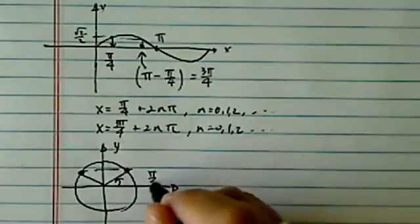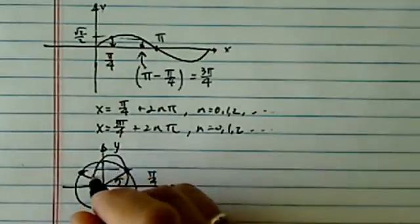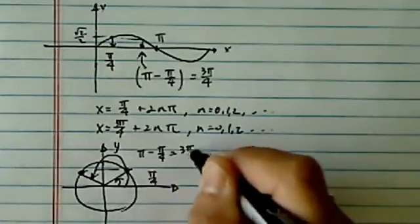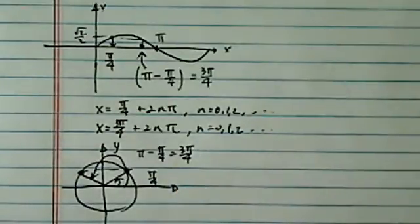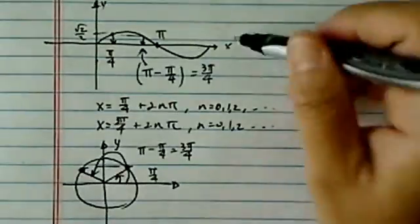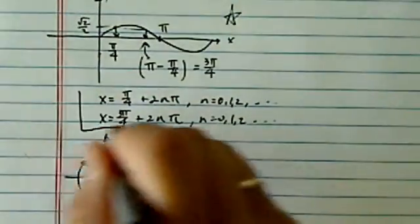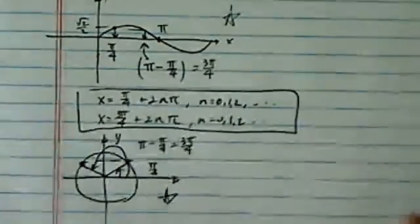One is over here, which is π/4. The other one is a little bigger, that's π minus π/4, which is 3π/4. So it doesn't really matter if you use the curve here or you use the unit circle, but the answer stays the same. Now let's go look at the other half.